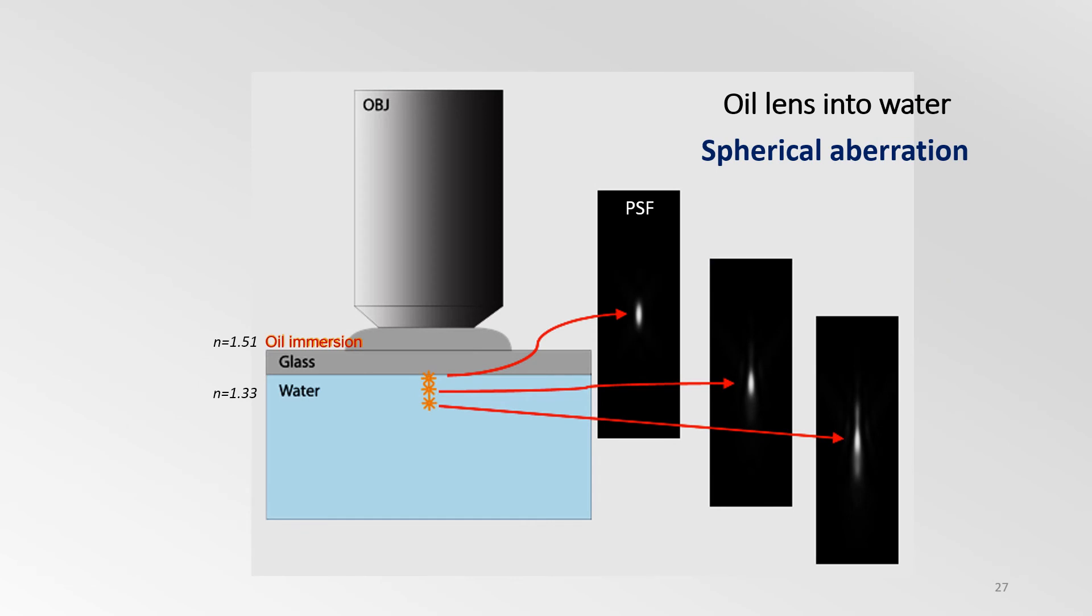For instance, if an oil immersion lens is used to image a sample immersed in an aqueous medium, the mismatch in refractive indices messes with the PSF as light goes deeper into the sample. This causes spherical aberration, bringing about the loss of information, resolution, and brightness with imaging depth and results in images that are far from optimal.